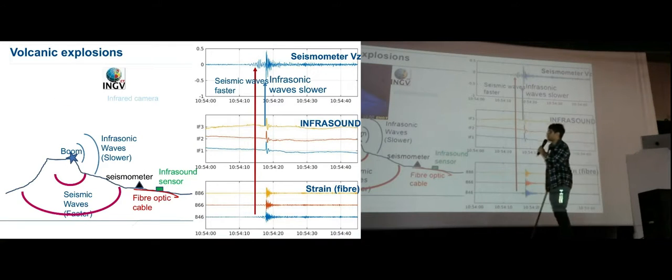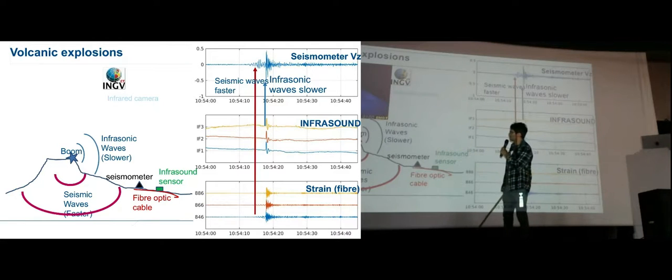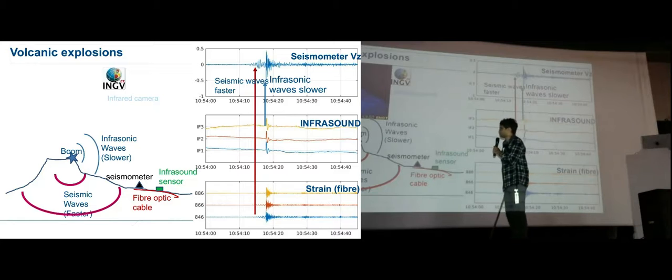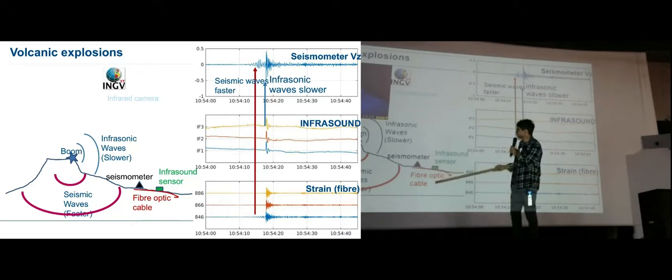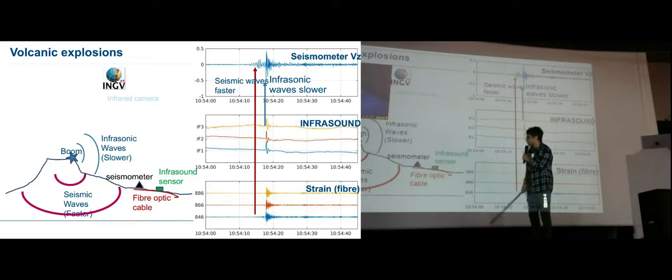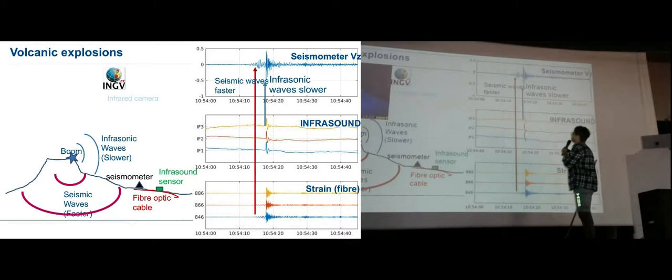You can see here an infrared camera from the INGV observatory pointing towards Mount Etna, and you saw a little explosion. Even these little explosions produce pressure waves that propagate in the air, and seismic waves which propagate even faster on the ground. When they arrive to the seismometer, the infrasound, and the fiber optic cable, they look like this.